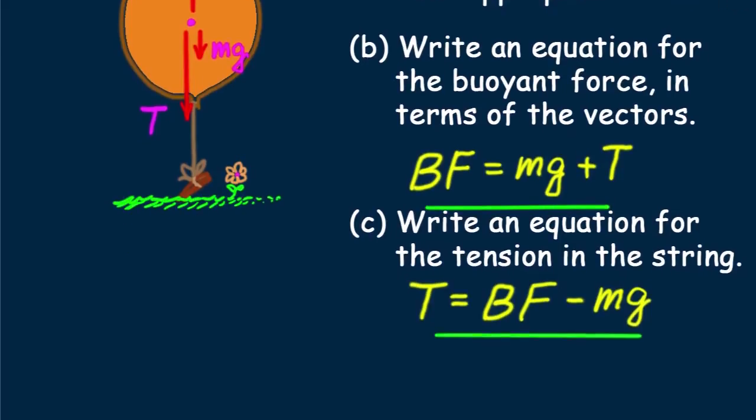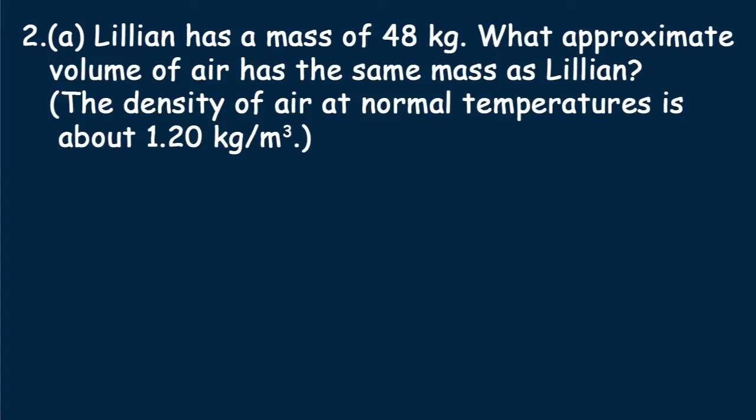Now let's try a problem with numerical values. Problem 2A: Lillian has a mass of 48 kilograms. What approximate volume of air has the same mass as Lillian? The density of air at normal temperatures is about 1.20 kilograms per meter cubed. We begin this problem by focusing on what is asked for: volume of air.